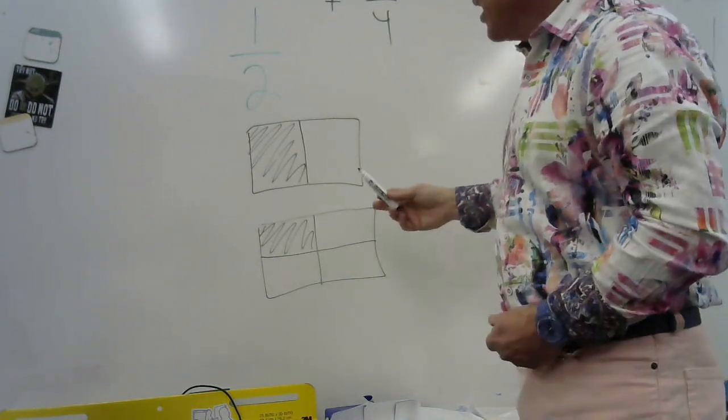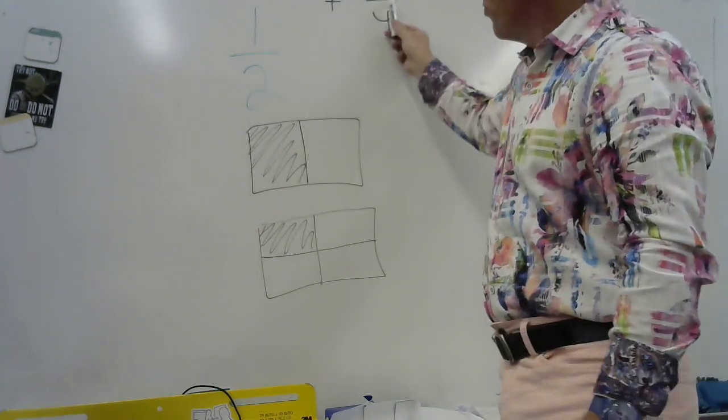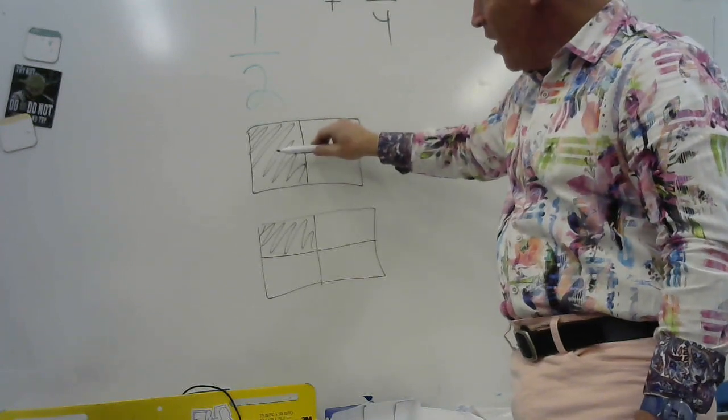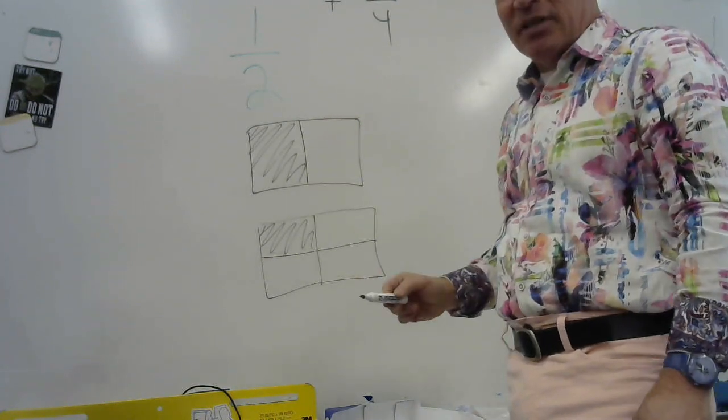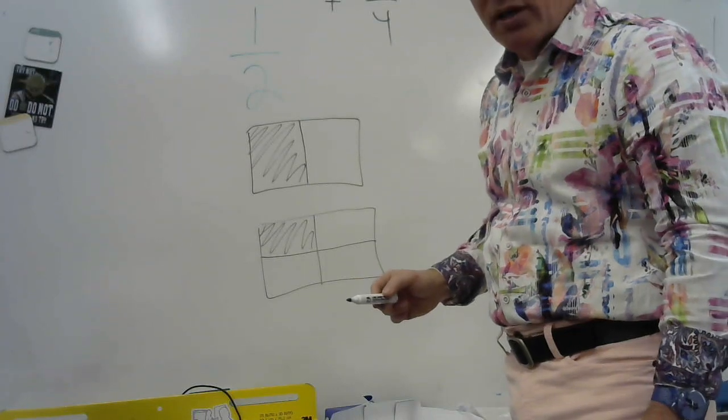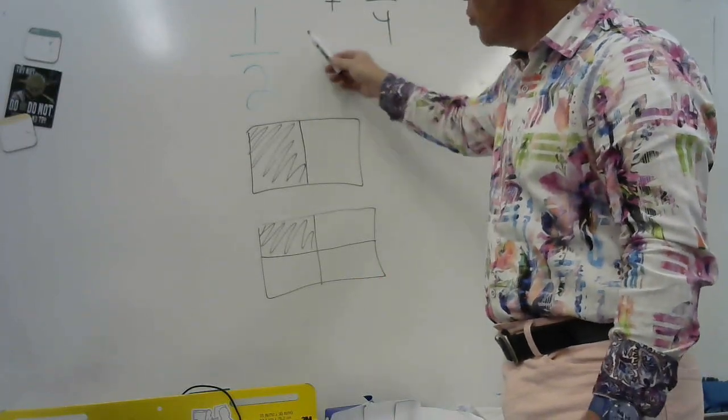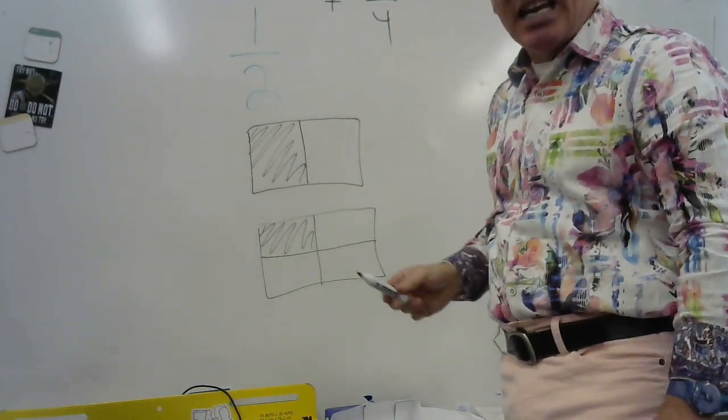So what mistake a lot of kids do is they think, oh I could just add one plus one and get two. But look, if I add this one plus this one, they're not the same size. We call that congruent. And in order to add and subtract fractions, the sizes need to be congruent.